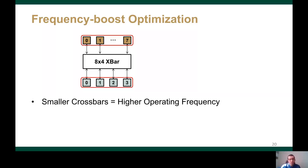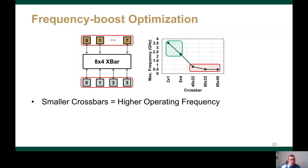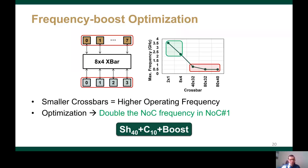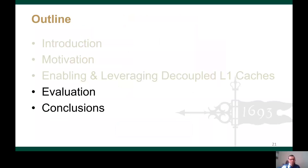One more advantage of using smaller crossbars in network number 1 under the cluster cache design is the possibility of operating them at a higher frequency. A small 8-by-4 crossbar used in the SH40+C10 design can operate at 4.5x higher frequency compared to the 80-by-52 crossbar used in the baseline. So we propose to double the frequency of the small crossbars in network number 1, and we refer to this design as SH40+C10+BOOST. I will now evaluate this design and conclude the talk.